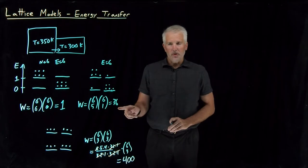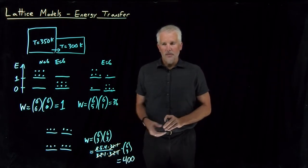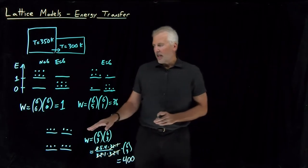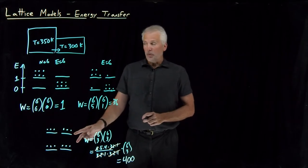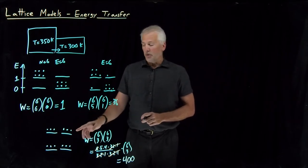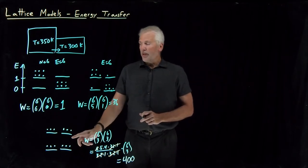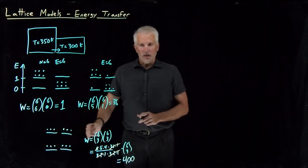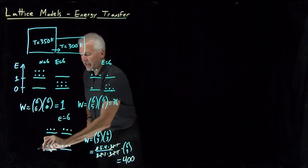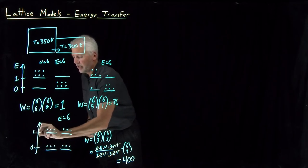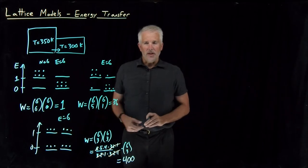That multiplicity of 400 is greater than the previous ones. If I wrote out all the possibilities, that would be the macrostate with the highest multiplicity. The lattice model confirms our intuition: the most likely state, the most random state with the highest multiplicity, is the one where the energy is equally distributed across both halves of the system. Energy is still conserved — still six total units — but now half is on the left and half on the right.